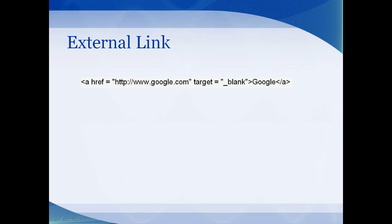The format for an external link is very similar — you still have the A and HREF indicating where the link goes. On an external link, you must include HTTP; if you leave that out it will not work. It's best to just copy and paste the URL rather than type it, so you get it exact. The target attribute means the link will open in a new window or tab — that's the user's preference. Anytime you have an external link, you want to include that so you keep people on your web page rather than sending them away. That's it for links and images — we'll see you in the next video.